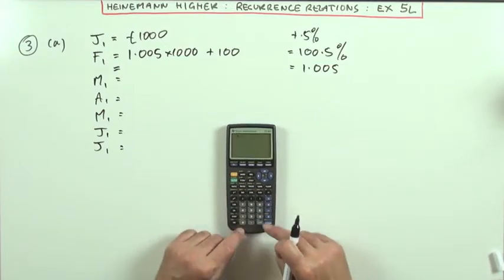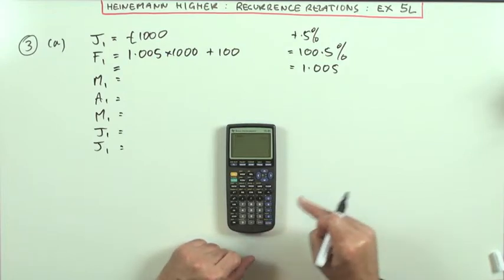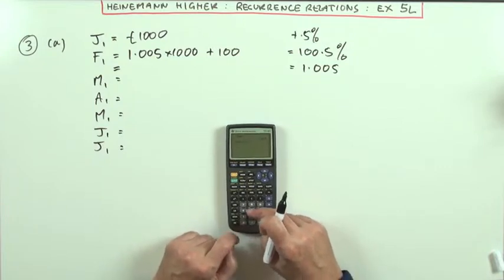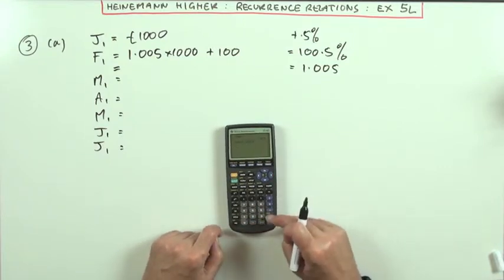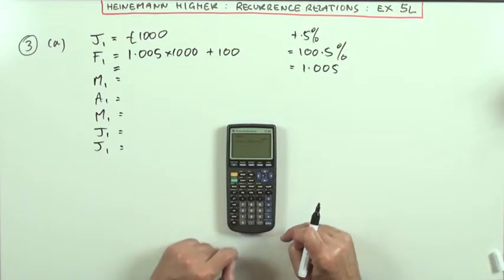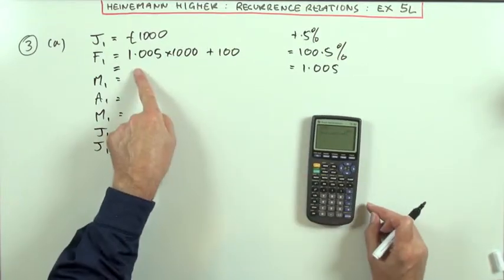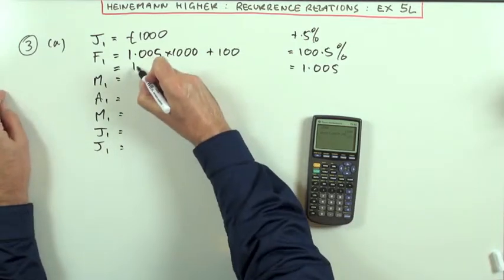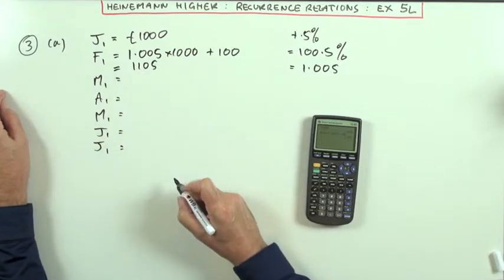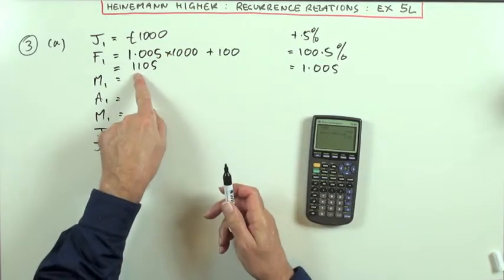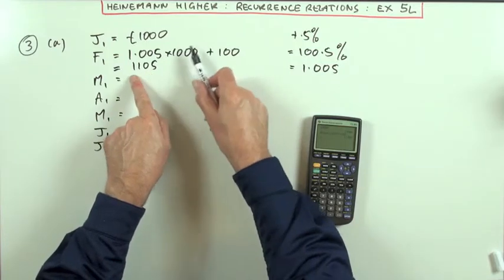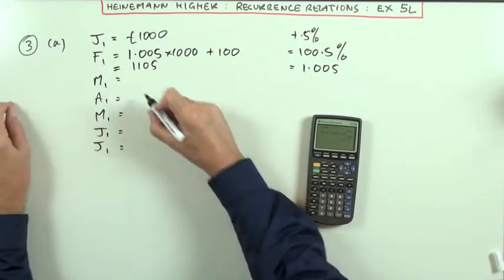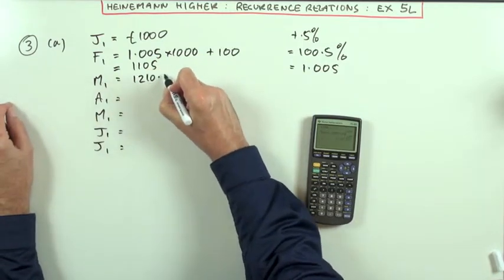So, I'm going to put 1,000, press equals, that enters into the answer memory, multiply by 1.005. That adds on 0.5%. Then, add on 100. And then every time I press equals, it'll give me the 1st on the following month. So, for the 1st one, for the 1st of February, it means I'll have £1,105. Meaning, of course, that was the amount after I added the £100. So, at the end of January, it was just 1,005. Next one's going to be 1,210.52.